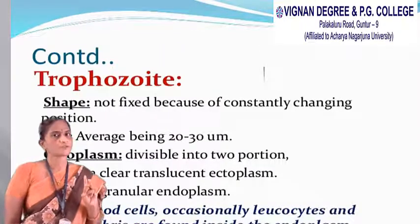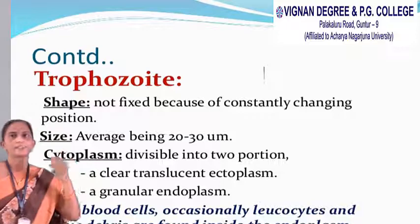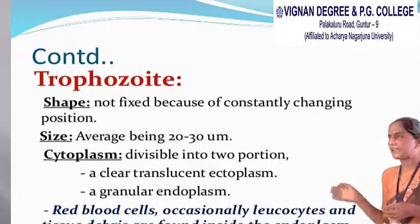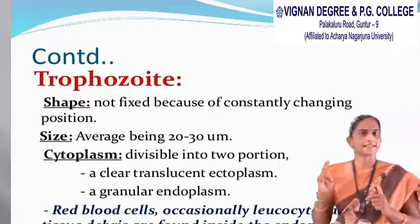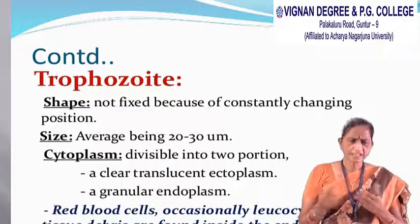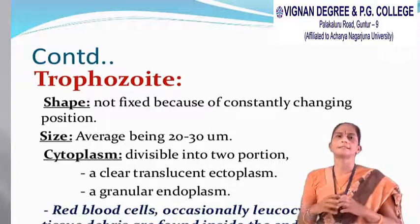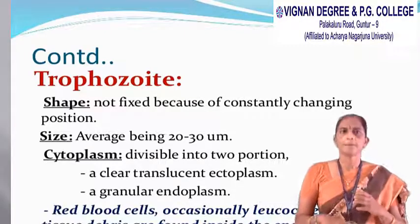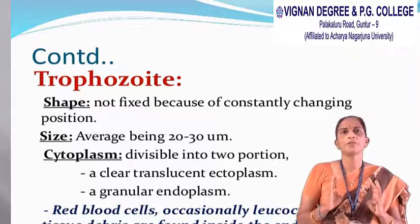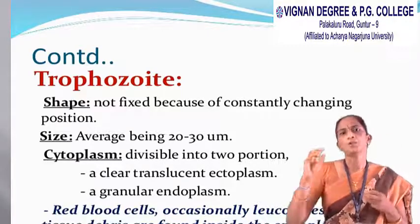The trophozoite is the active feeding stage. It is shapeless and the size varies from 20 to 30 micrometers. It is present in ectoplasm and endoplasm. Sometimes it engulfs RBC cells. The trophozoite consists of four nuclei and is irregular in shape. It is mainly present in the lumen of the intestine. It is a protozoan parasite.